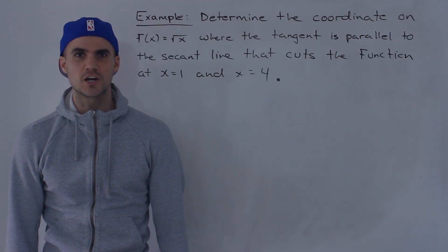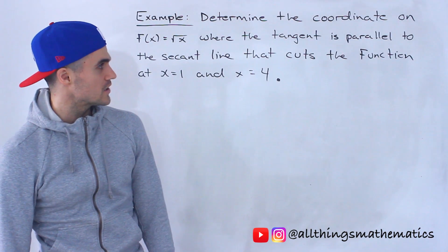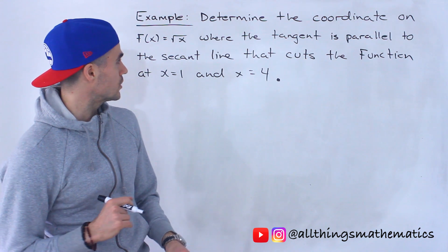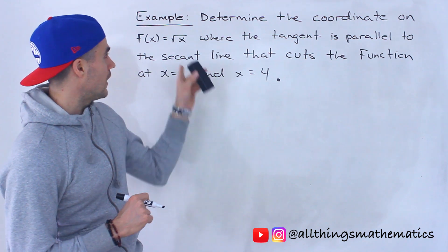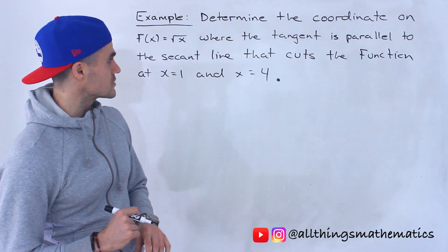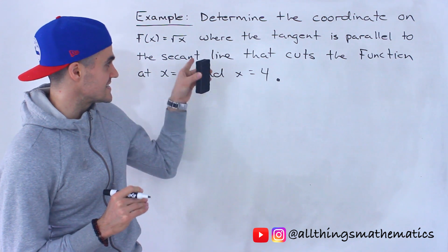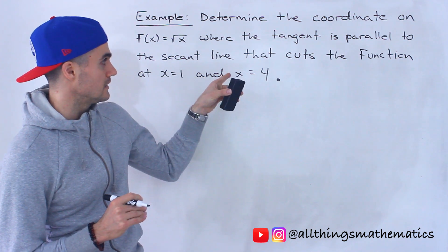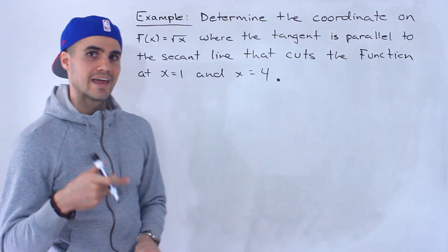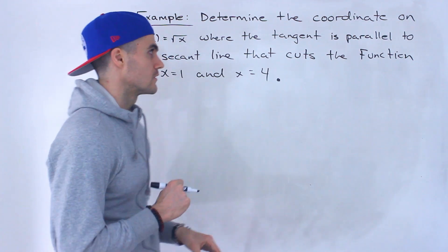What's up everyone? Patrick here. Welcome back. Moving on to the next question — this one's going to be a little bit tricky. Determine the coordinate on f(x) = √x where the tangent is parallel to the secant line that cuts the function at x = 1 and x = 4.